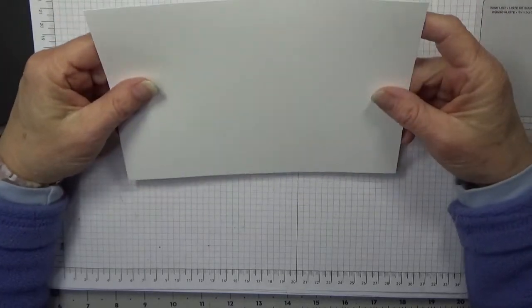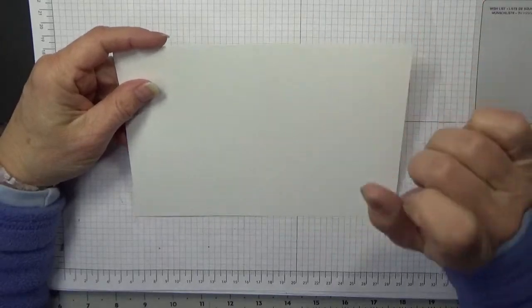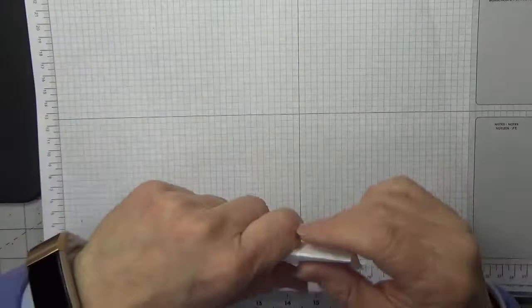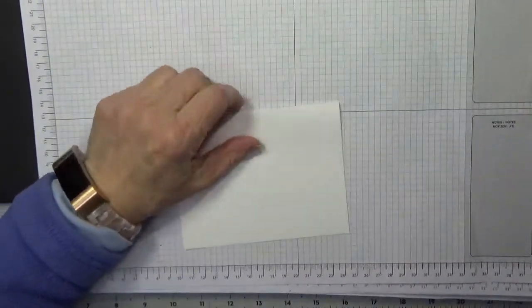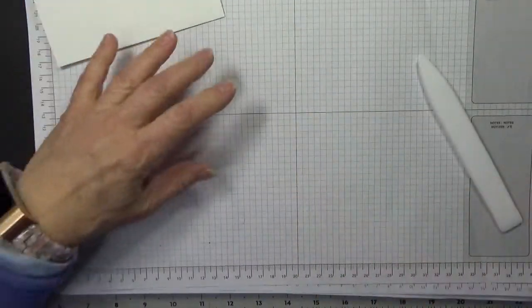We have a basic white piece of cardstock that is 8 1/2 x 5 1/2, scored at 4 1/4. Pretty simple. Let's set that aside.